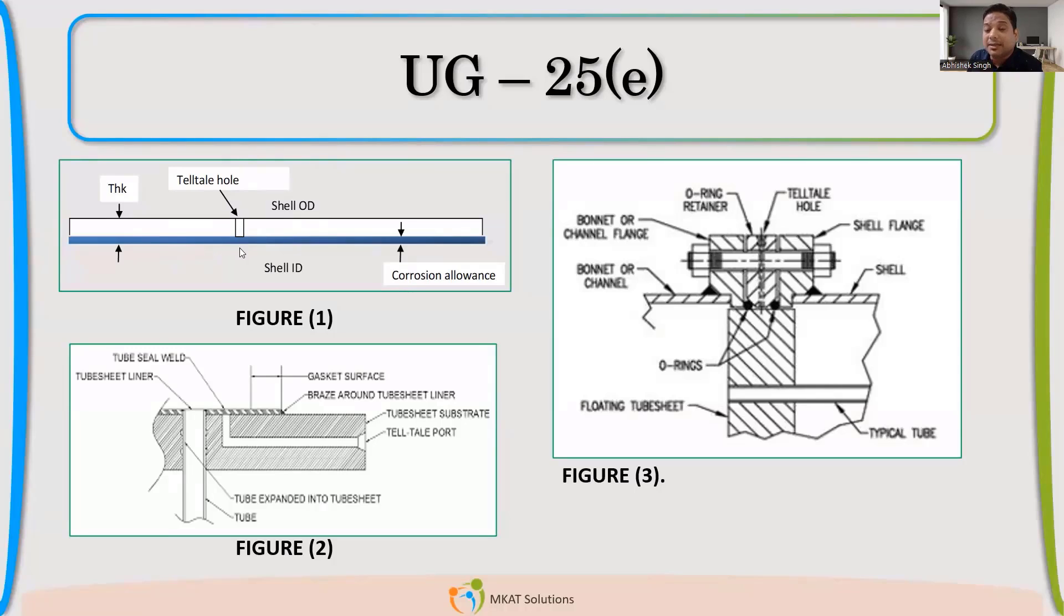If it has completely corroded, the telltale hole will detect a leakage. So telltale hole will detect a leakage and this leakage will tell us that Corrosion has, whatever Corrosion Alliance we have provided, that is gone. And now we should replace the pressure vessel. Getting it either replace or repair, whatever we have to do. So if it's very locally that Corrosion has happened, then we may decide to repair it. But best way is to make a fresh vessel. That is the first use of telltale hole.